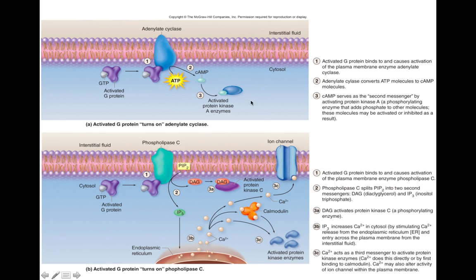Looking at the top picture: here's your activated G-protein, which then activates adenylate cyclase. Adenylate cyclase's job is to take ATP and turn it into cyclic AMP. Cyclic AMP then has one of a few different jobs in the cell, which we discussed before. The bottom picture is showing this activated G-protein activating a separate enzyme system — the phospholipase C system — which we'll go over now.